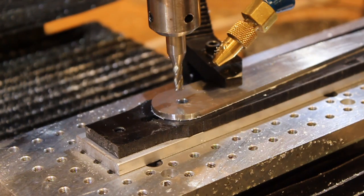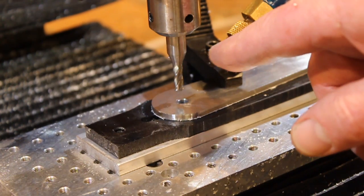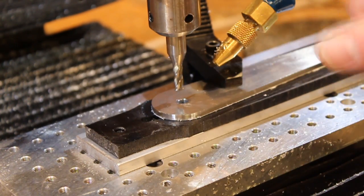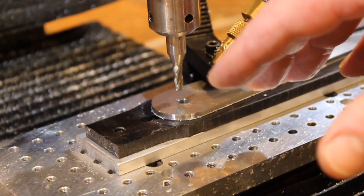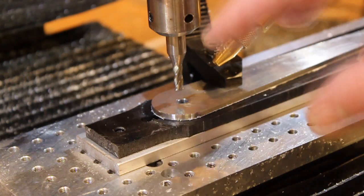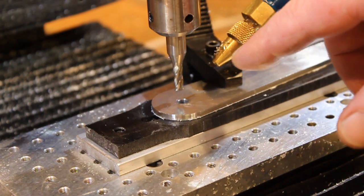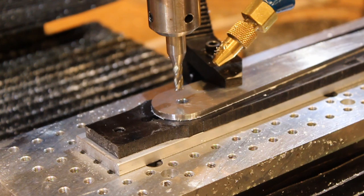The next step is to make a pocket here for the clutch. We'll make the pocket first with the end mill, and later we'll use the boring tool to make an exact circle to match the size of the clutch.